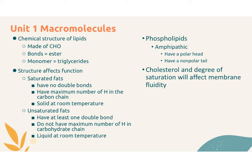The most basic thing you need to understand about lipids are the chemical structures. That includes the elements they're made up of, which are carbon, hydrogen, and oxygen. Now unlike carbohydrates, these don't come in a ratio — they consist mostly of carbon and hydrogen with a little bit of oxygen. They're held together by ester bonds, and the monomers are triglycerides, which are three fatty acids linked to a glycerol backbone.